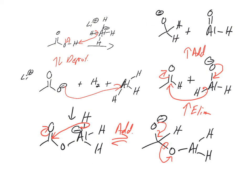Do we have any good leaving groups? No. So the second step with all of these — step two is always H⁺, protonation — and that gets us to the primary alcohol. That's how lithium aluminum hydride reduces carboxylic acids. Sodium borohydride won't do this; you need the more reactive species to do this.